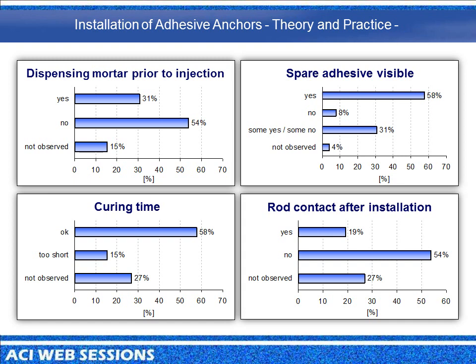Regarding the installation process: before using a new cartridge, it is necessary to squeeze out the first adhesive to ensure a uniform mix, but dispensing of the first mortar prior to injection was monitored in only 31% of applications. To ensure the anchor is fully seated in mortar, adhesive should be visible around the mouth of the borehole — this was observed in 58% of applications. Curing time was kept in about 60%. However, in about 20% of applications, rod contact after installation was monitored — in some cases installers bent rebars or touched threaded rods during curing, which can destroy the bond and reduce capacity.